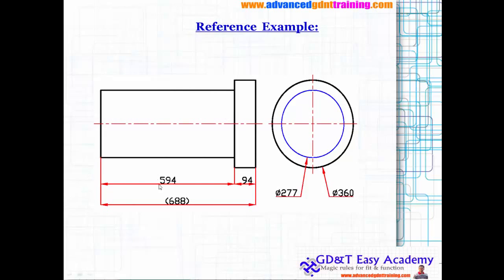This is one example where you can see 594 and 94 collectively give you 688. For understanding the total length, we use the reference value 688, but independently for inspection we have to use the individual dimensions, because the total one is just for our reference sake.